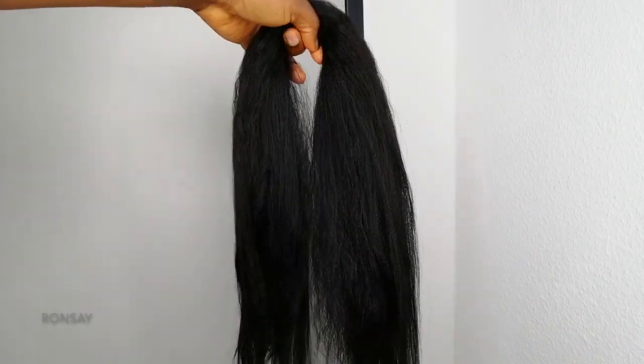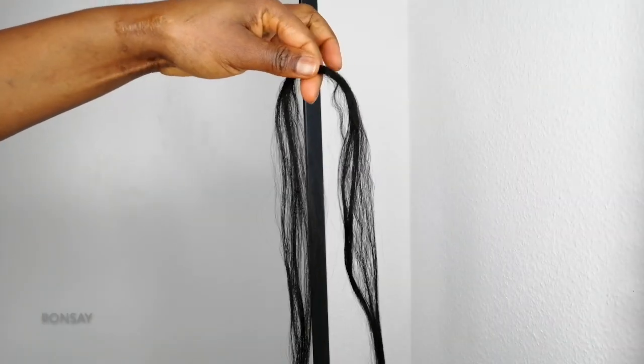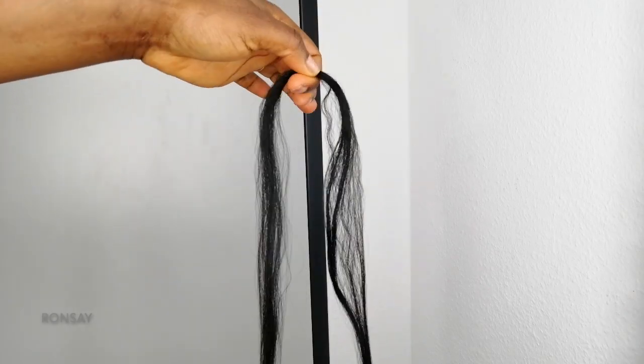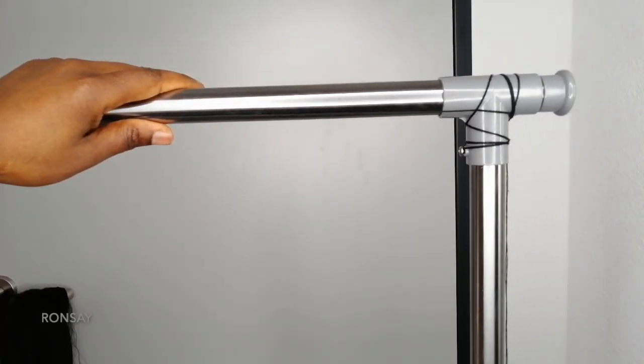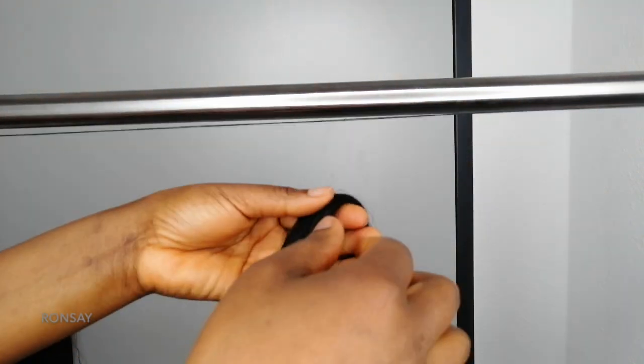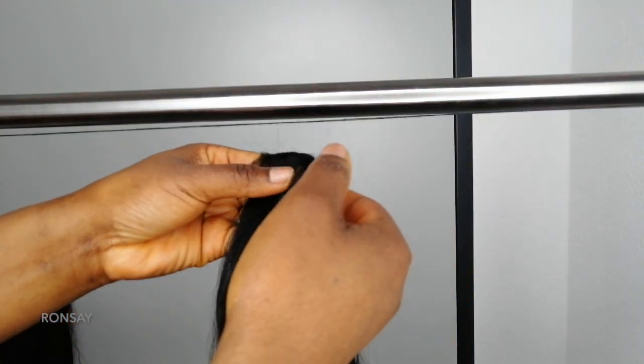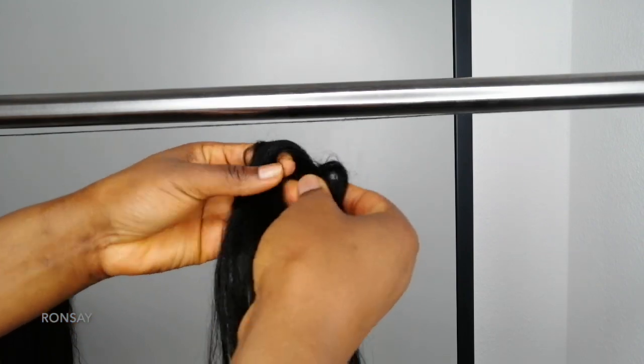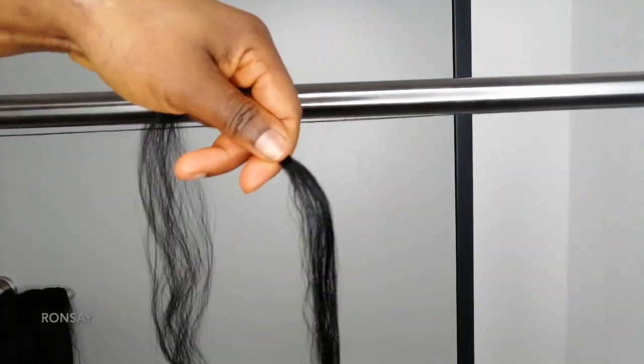So I put a thread here on my rod from one end to the other end and tied it up. I'm gonna make sure that I flip the hair over the thread and grab it like so.